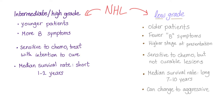Let's start with the aggressive, intermediate to high-grade lymphoma. Patients are usually younger, they have more B symptoms such as fever, weight loss, and night sweats. They are very sensitive to chemo and we treat with the intention to cure. That doesn't mean we cure all cases — it's an aggressive lymphoma. The median survival rate is short, probably one to two years.